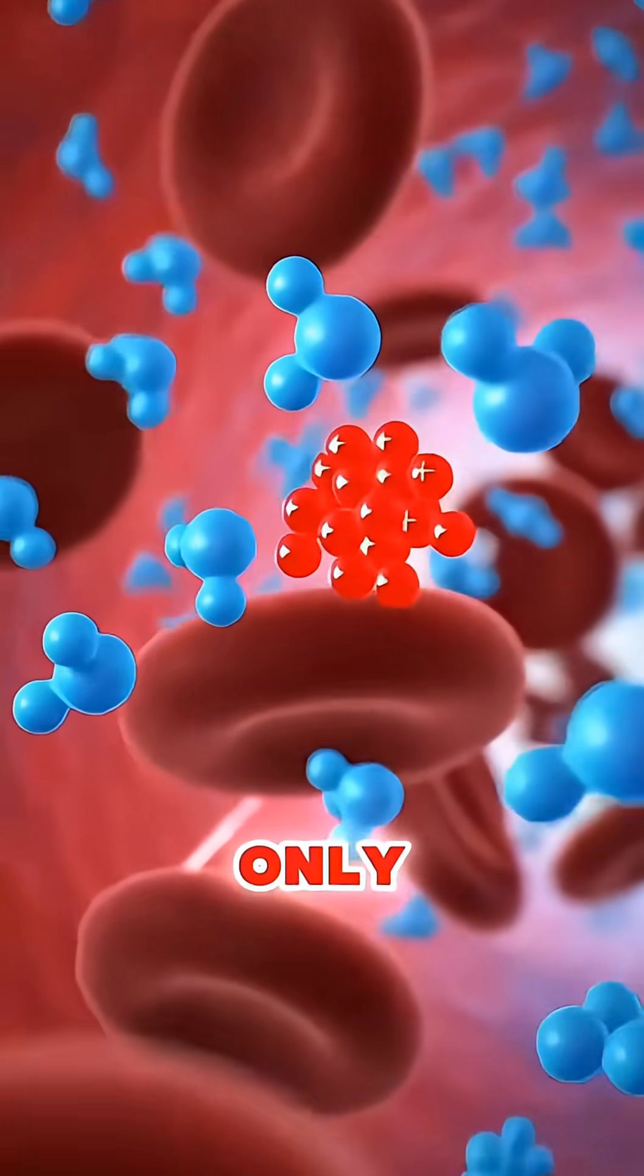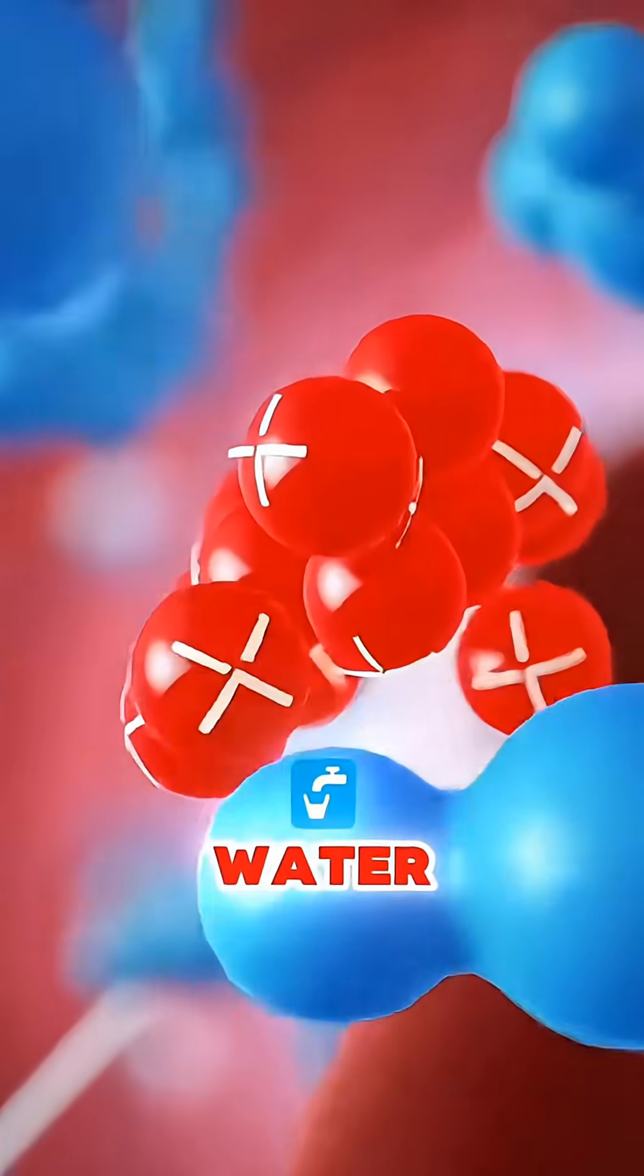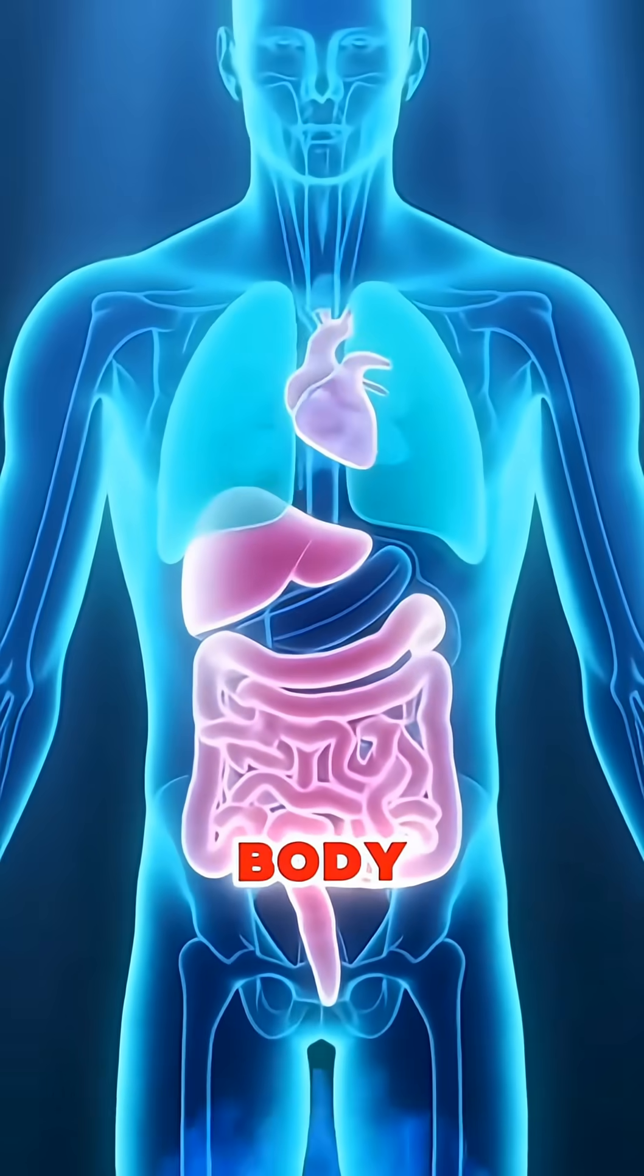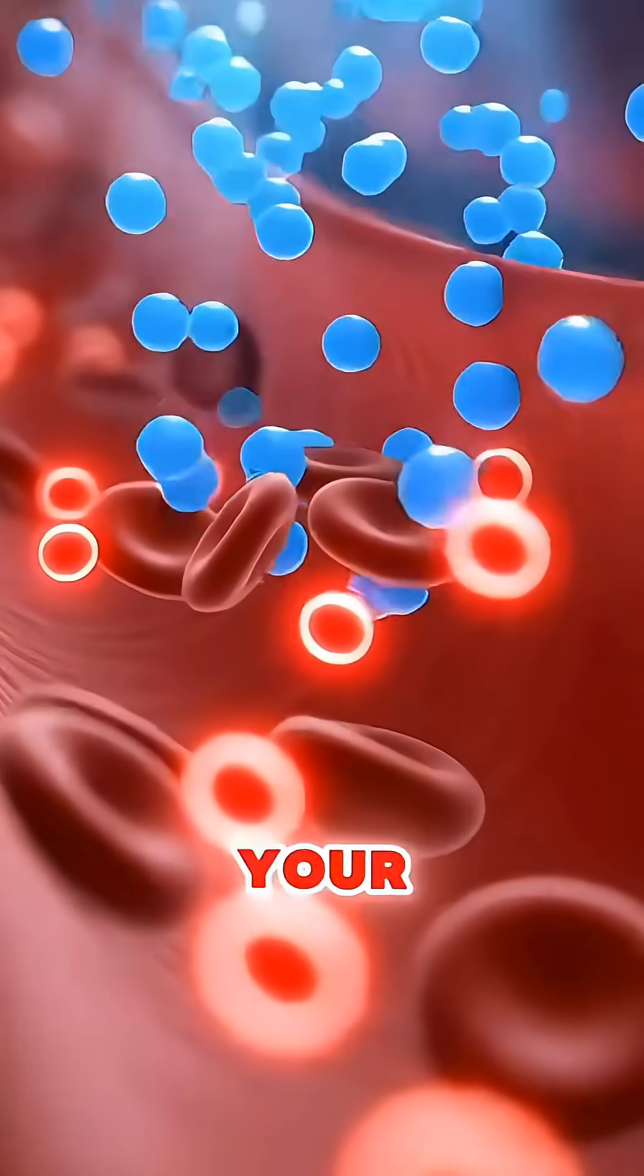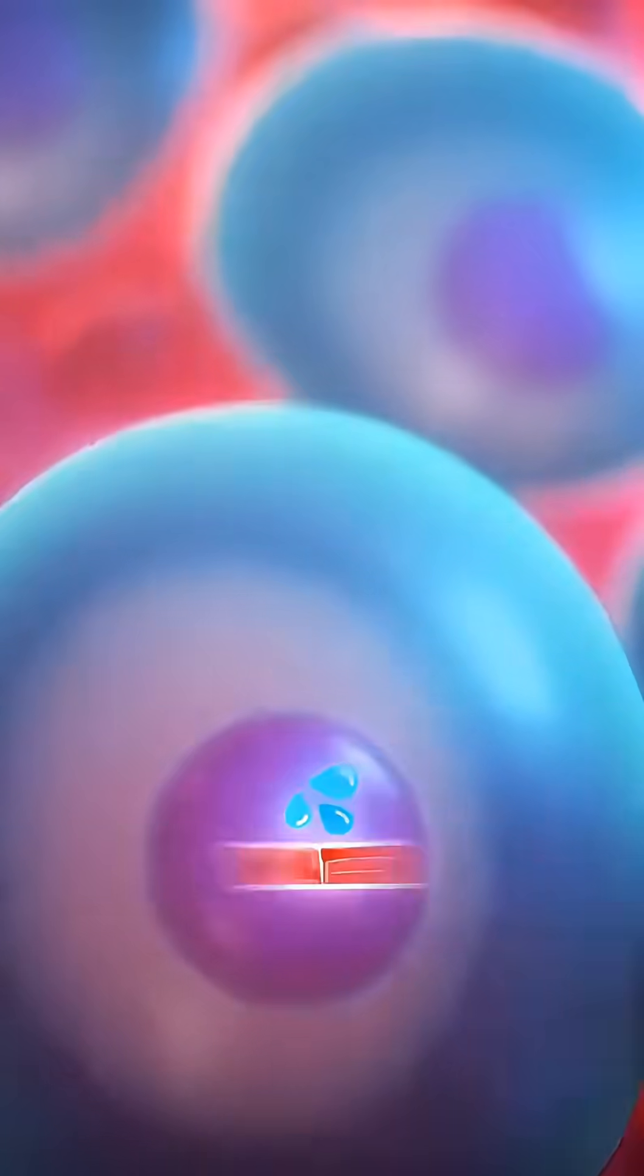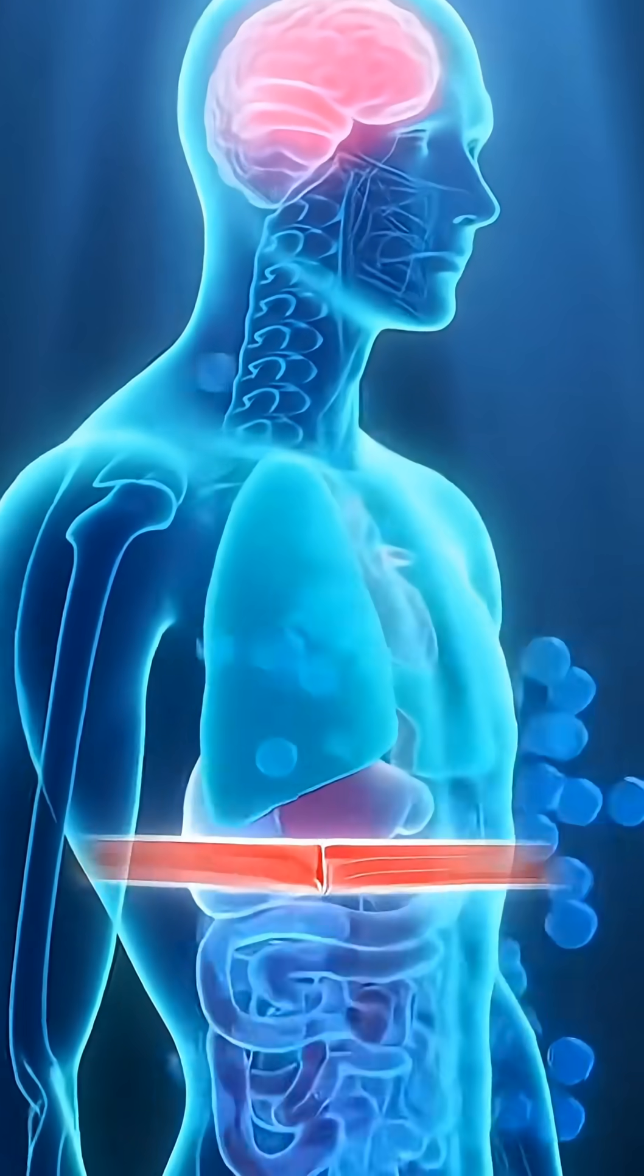Your blood can only handle a certain balance of water and electrolytes, especially sodium. When you overload your body too quickly, the sodium in your blood becomes dangerously diluted, creating a condition called water intoxication or hyponatremia.